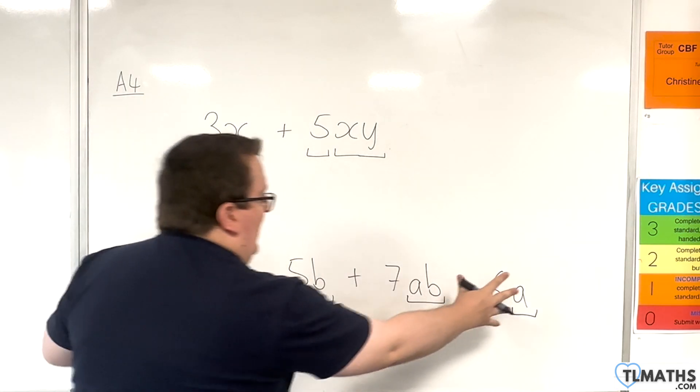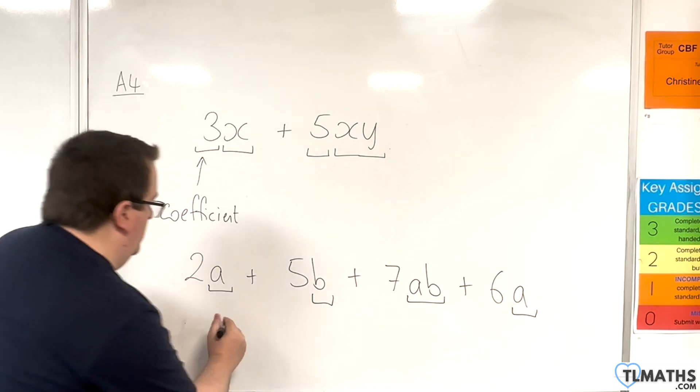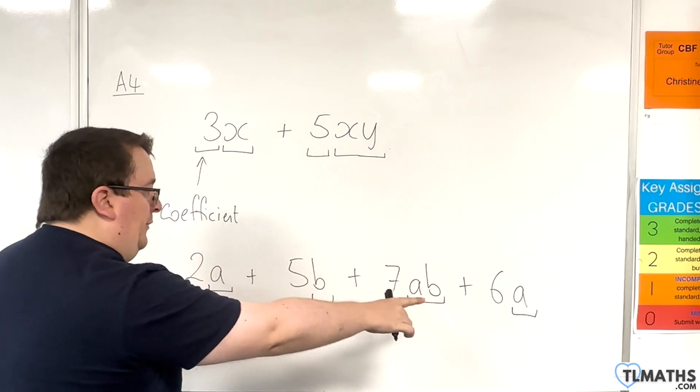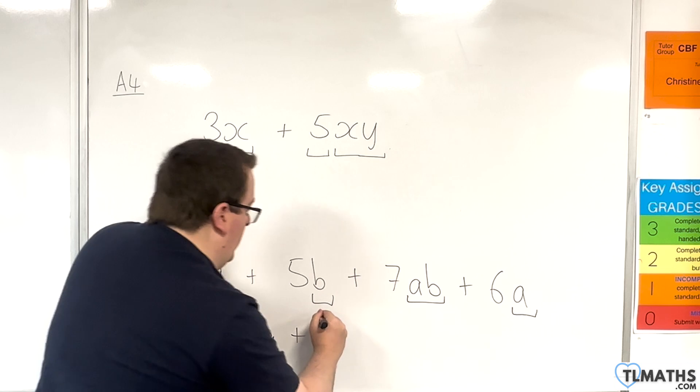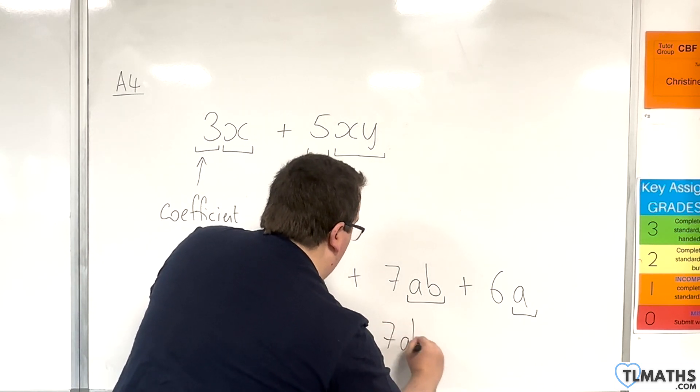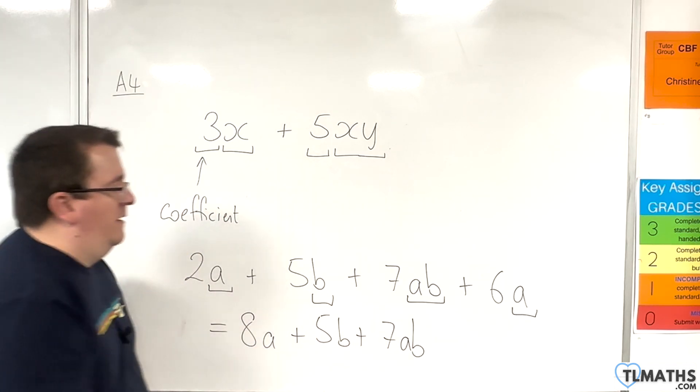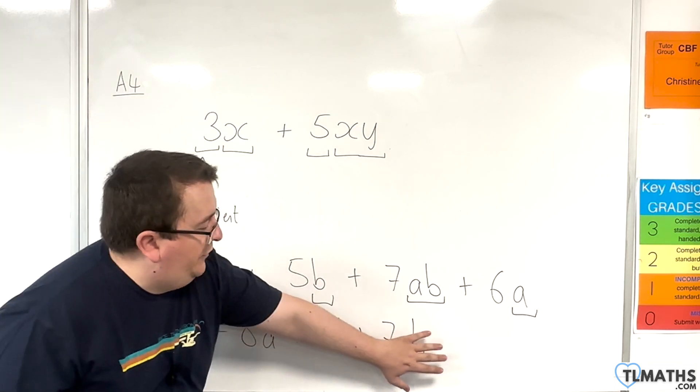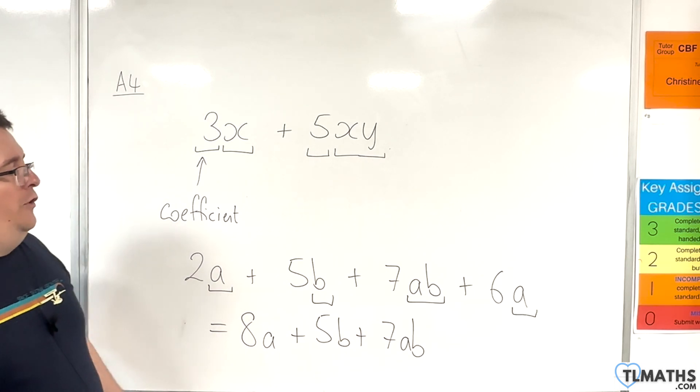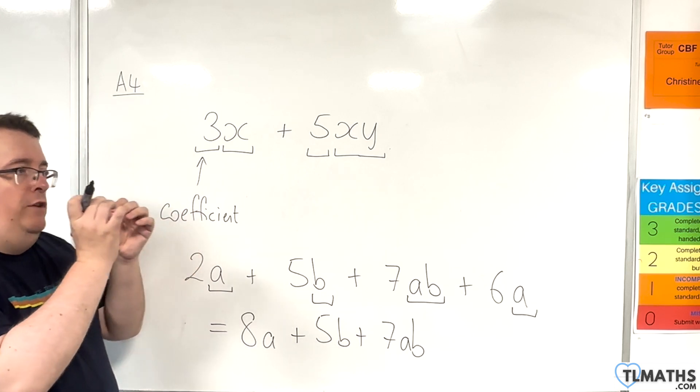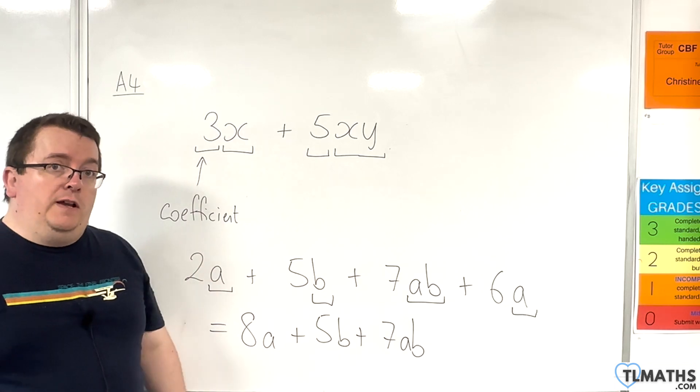So actually, I can collect those like terms together. So we can collect those, and we'll have 2a plus the 6a is 8a. But the 5b and the 7ab, I can't do anything with those. So they must remain as they are. And that is as simplified as I can make that expression. So you're looking to see whether you've got the same algebra bit to the right of the coefficient.